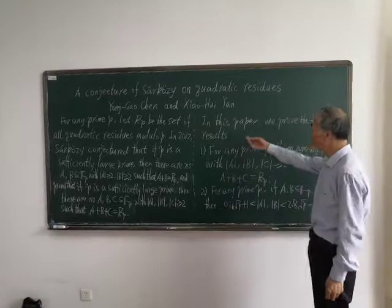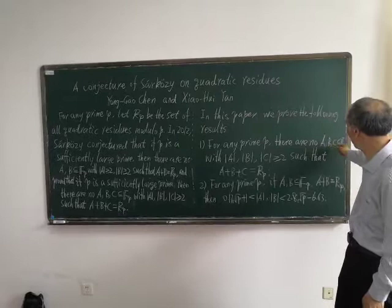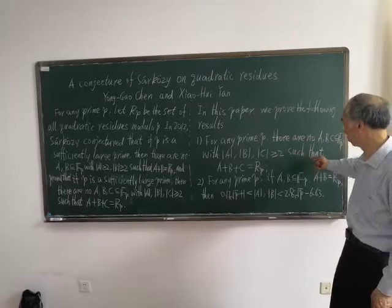In this paper, we prove the following results. The first result is: for any prime P, there are no subsets A, B, C with cardinality more than or equal to 2, such that A plus B plus C is equal to R_P.